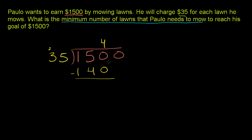Now we subtract. 0 minus 0 is 0. 5 minus 4 is 1. The 1's cancel out. We bring down this 0. 35 goes into 100. 35 times 2 is 70, and 35 times 3 is 105, so that's too big. So it goes into it 2 times.